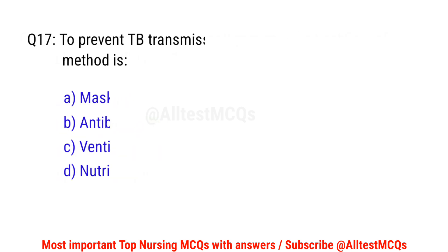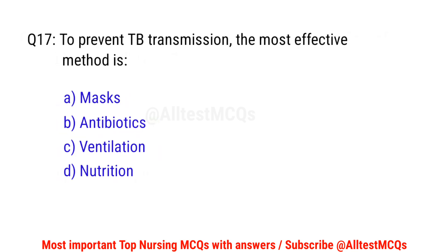Question number 17. To prevent TB transmission, the most effective method is? The right option is C: Ventilation.